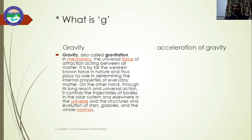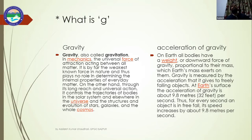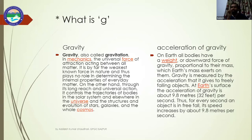Acceleration due to gravity is straightforward to understand. If you drop an object from a plane, its speed increases over time. The change in velocity per second is acceleration. The acceleration due to gravity is specifically the acceleration that exists due to gravitational force — for every second an object is in free fall, its speed increases by about 9.8 meters per second.